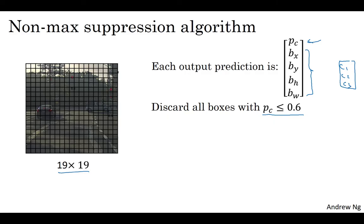So the way to think about this is for each of the 361 positions, you output a bounding box together with a probability of that bounding box being a good one. So we're just going to discard all the bounding boxes that were assigned a low probability.